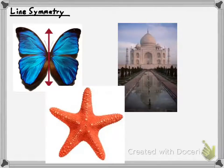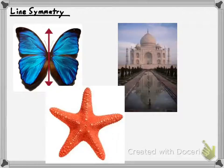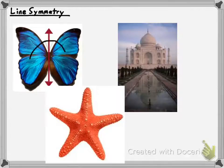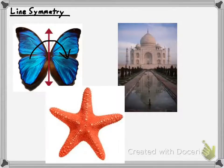Line symmetry is one that I know you are familiar with. A figure has line symmetry or reflectional symmetry any time it's possible to reflect the figure in a line of symmetry and get it to match up onto itself. For instance, if I were to reflect the left half of this butterfly in this line, it would match up exactly with the right half of the butterfly. So this is a line of symmetry.